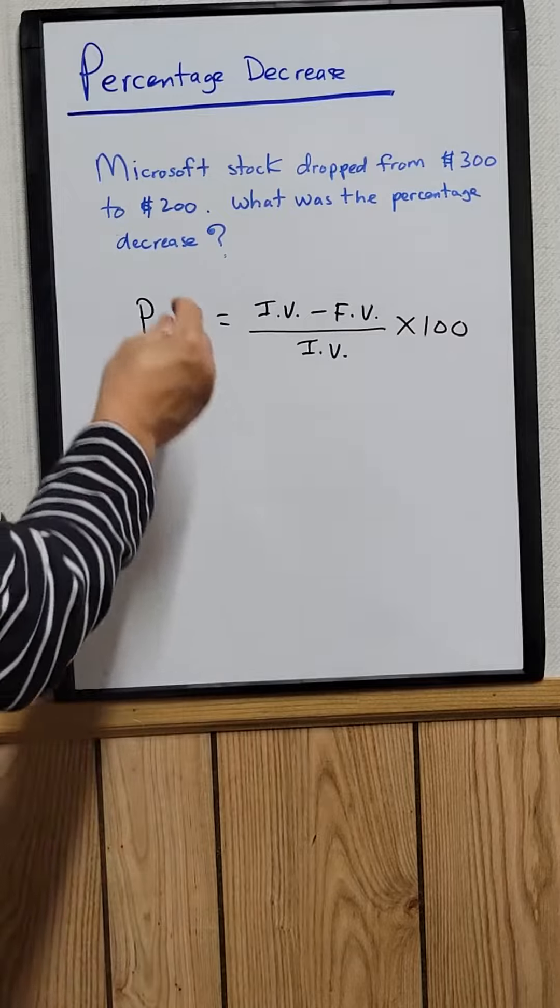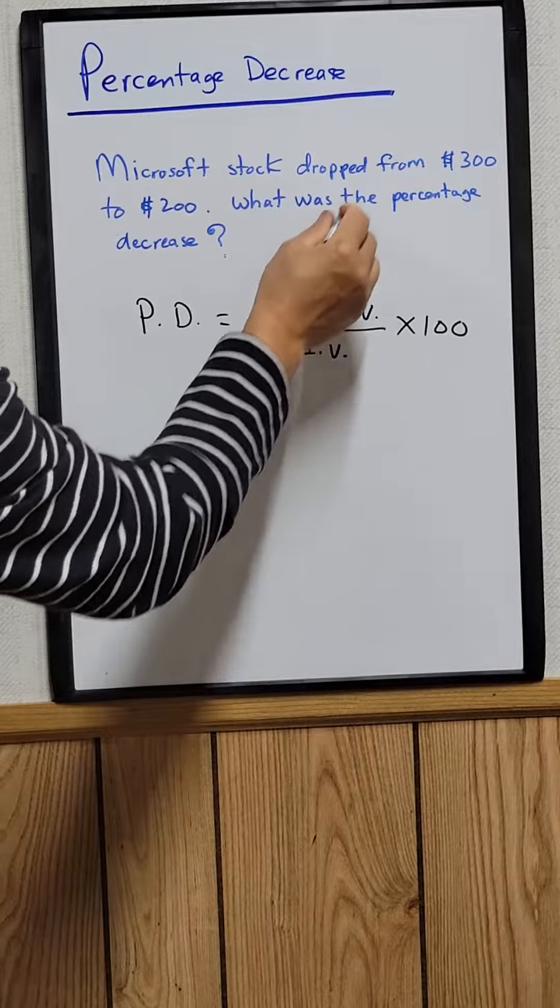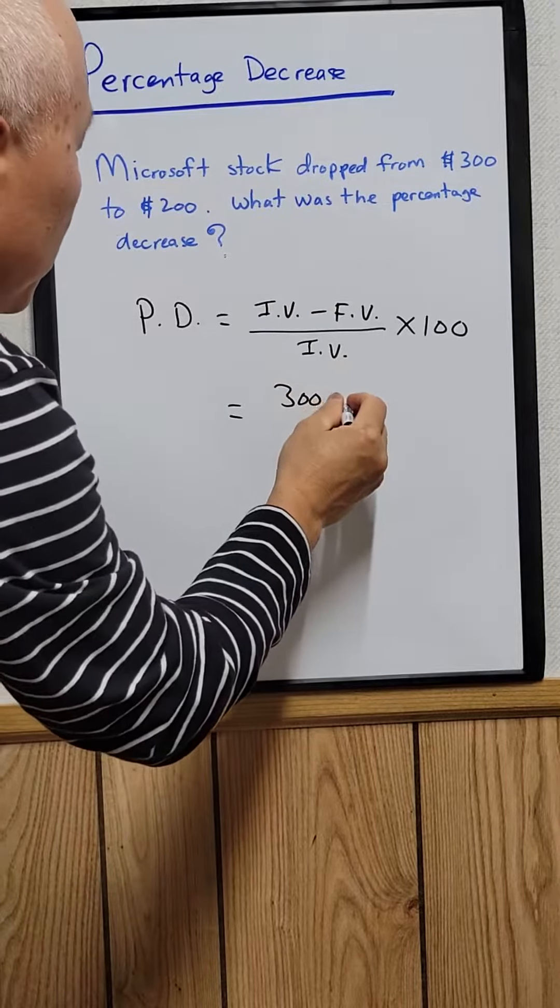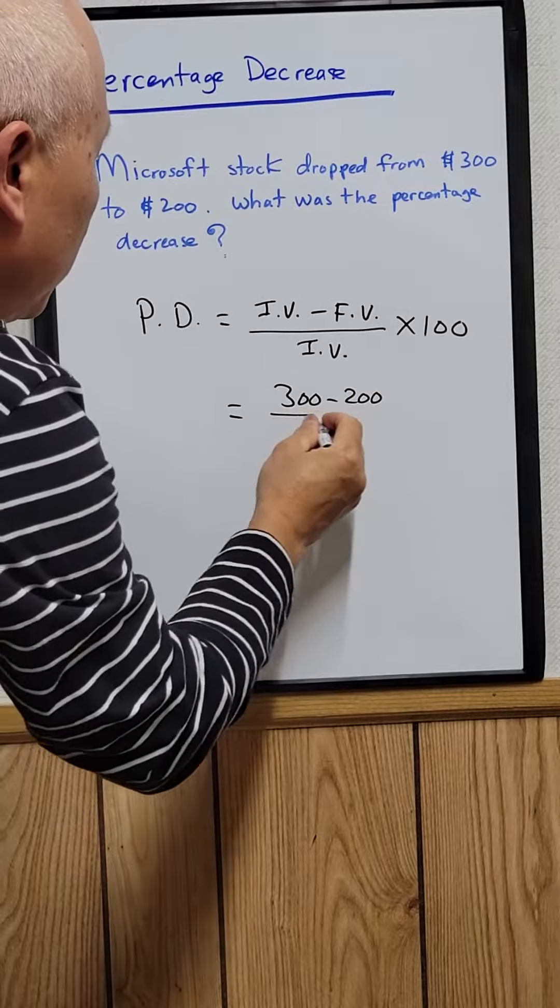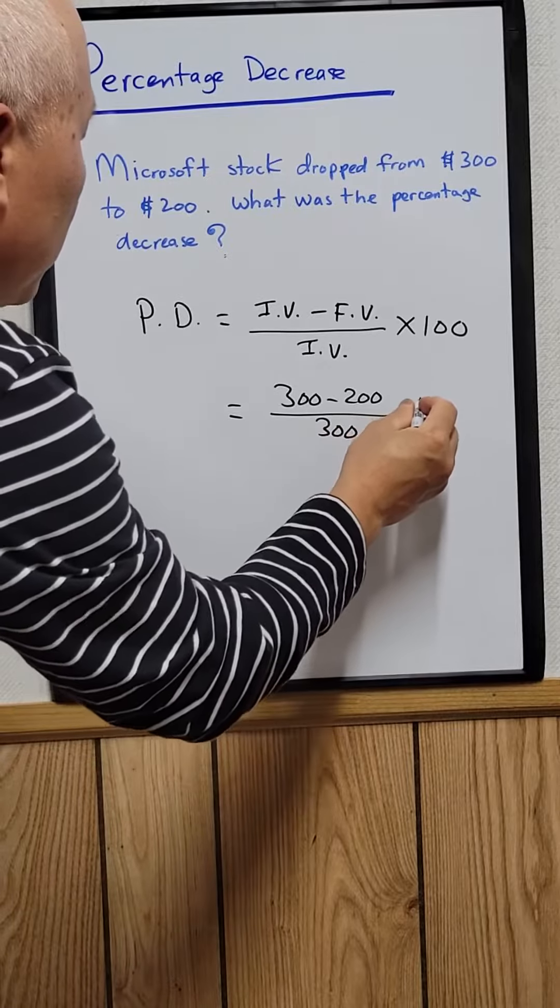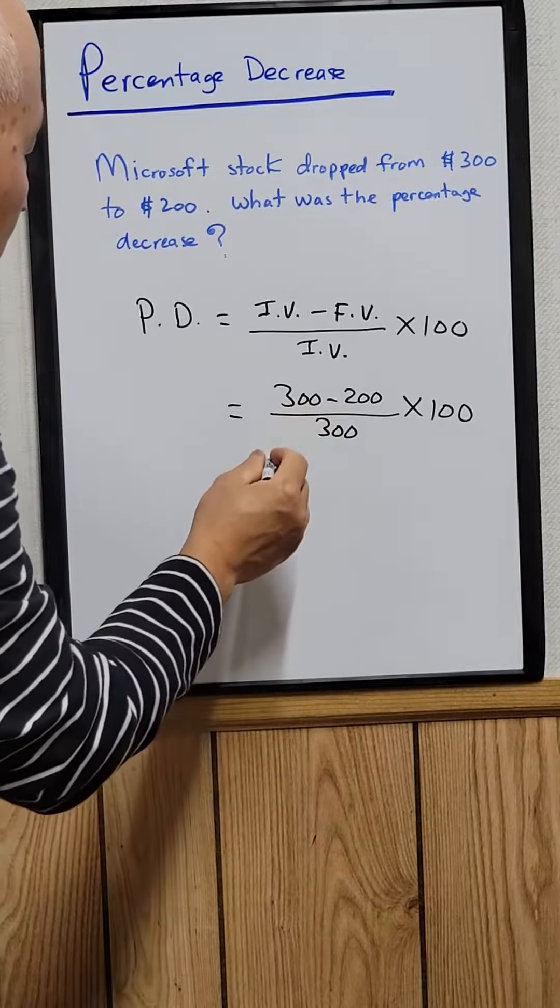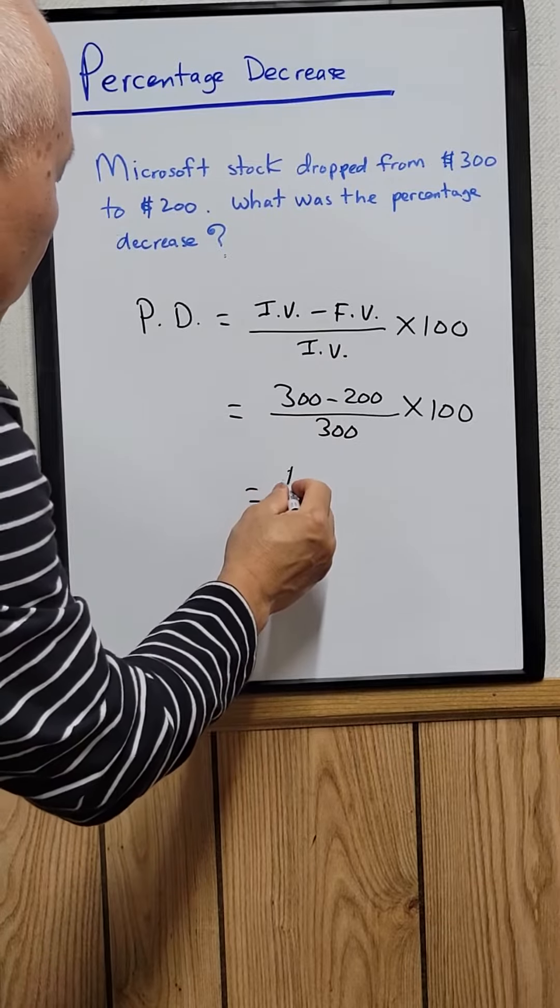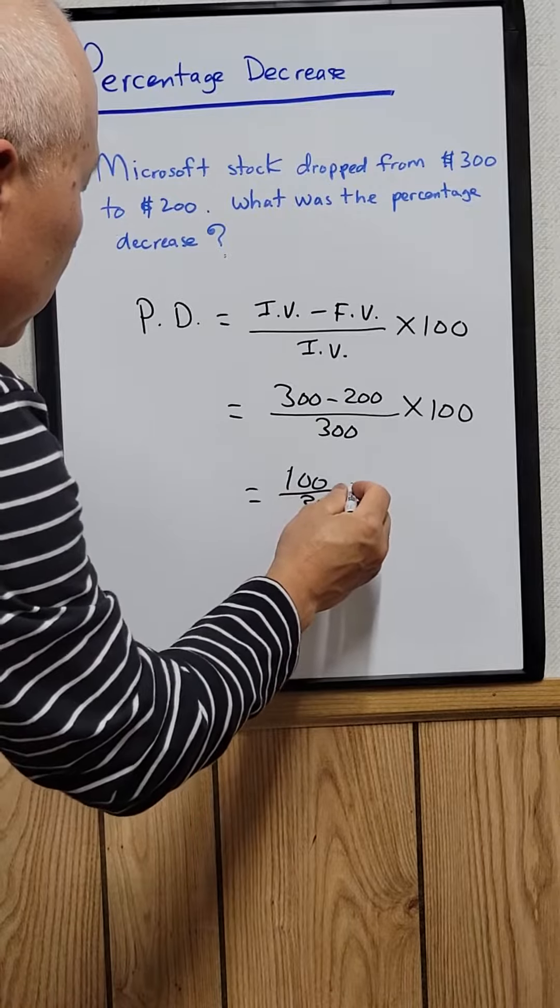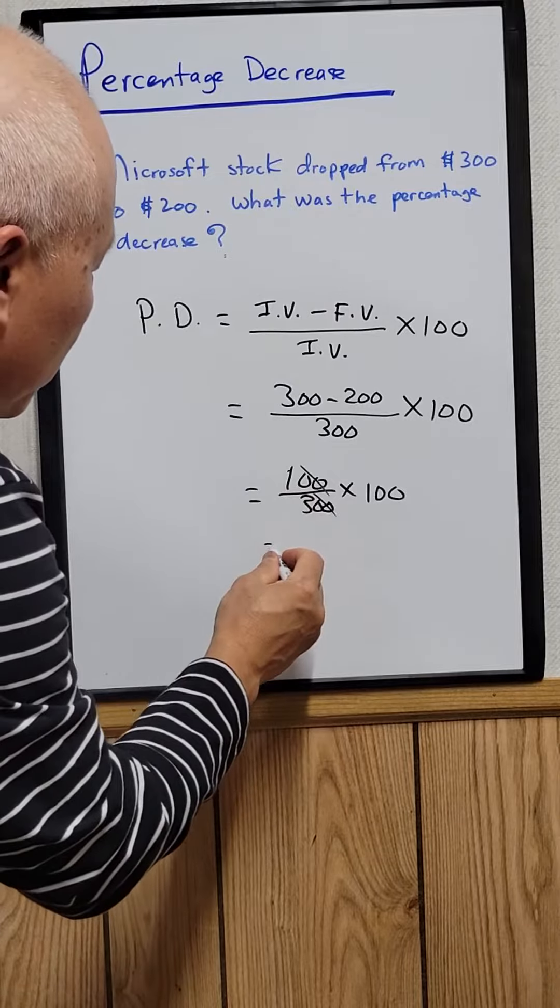So the initial value would be 300, the final value would be 200, divided by the initial value, which is 300, times 100. So 300 minus 200 is 100, divided by 300, times 100. You can cancel out the two zeros right here.